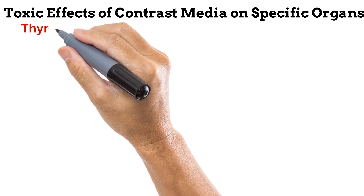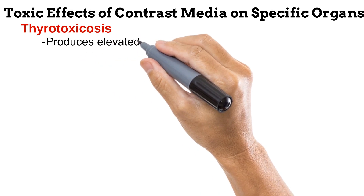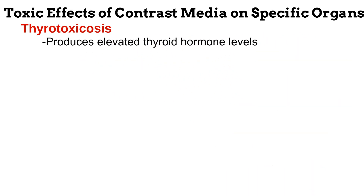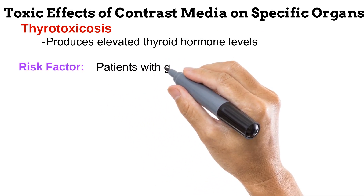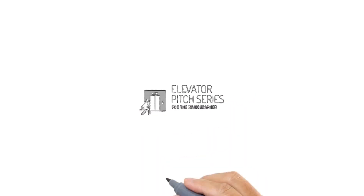The final organ we will look at is the thyroid gland. The toxic effect of contrast media on the thyroid is seen as an elevated level of thyroid hormone in the body, meaning contrast media causes the thyroid gland to secrete excessive thyroid hormone, leading to a too high rate of metabolism. Patients suffering from goiter are at risk of experiencing thyrotoxicosis due to contrast media. That concludes the third part on contrast media — we wrap it all up in the next video. Please subscribe and share with your colleagues, and do enjoy the learning process. Take care.